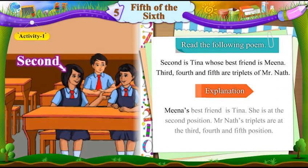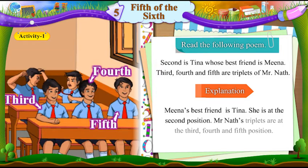Meena's best friend is Tina. She is at the second position. Mr. Naath's triplets are at their third, fourth and fifth position.